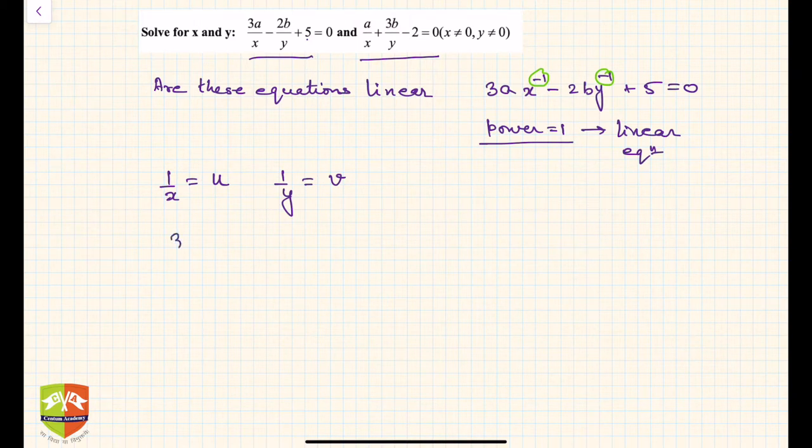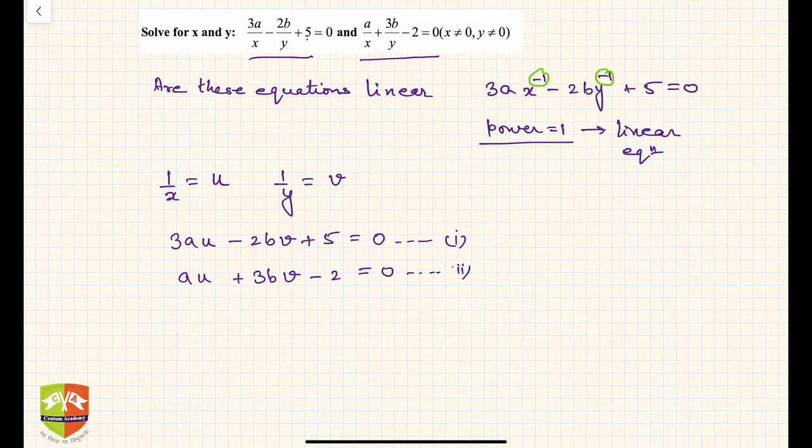So you will get 3au minus 2bv plus 5 equals 0. Let us say this is equation number 1. And the second one will be au plus 3b times v minus 2 equals 0. Let us say this is equation number 2.